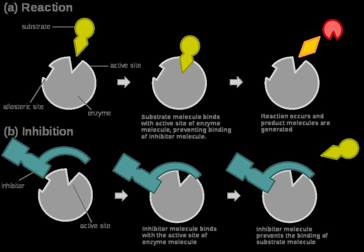Competitive inhibition is the interruption of a chemical pathway owing to one chemical substance inhibiting the effect of another by competing with it for binding or bonding. Any metabolic or chemical messenger system can potentially be affected by this principle, but several classes are especially important in biochemistry and medicine, including the competitive forms of enzyme inhibition, receptor antagonism, antimetabolite activity, and poisoning.